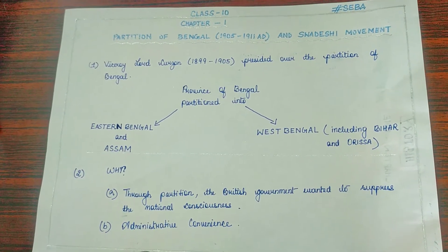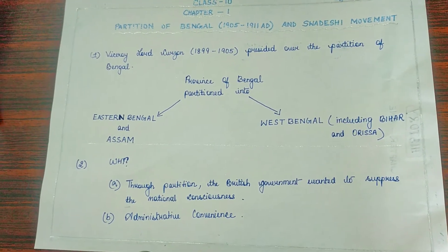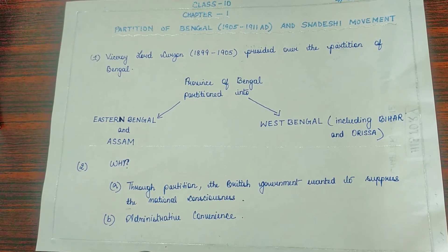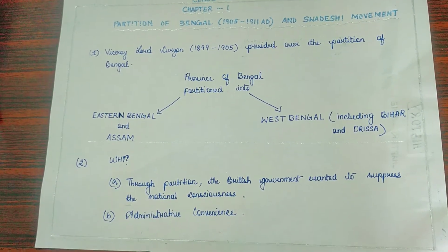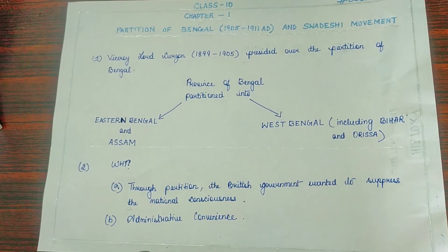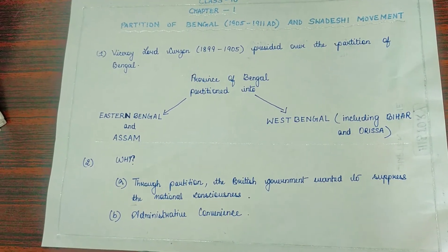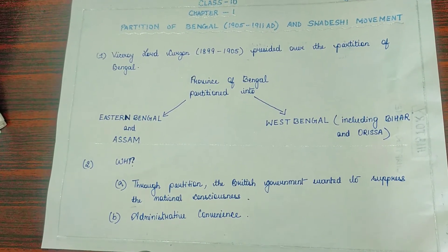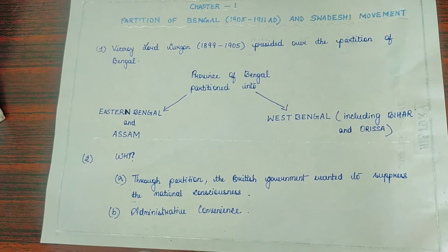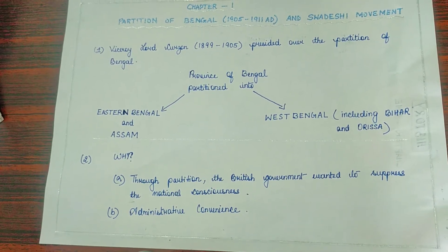At first, we have to look at our first point. Please note that Viceroy Lord Curzon presided over the partition of Bengal. So whenever you hear the term 'partition of Bengal,' it was in 1905, and it was done by Viceroy Lord Curzon.